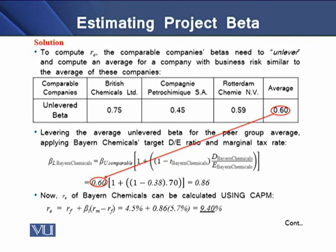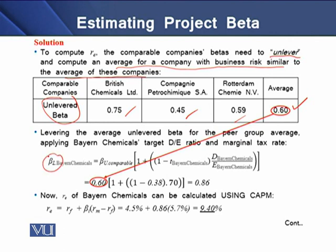To compute the return on equity, we unlever the comparable company betas and then compute an average for a company with business risk similar to these three companies. When we have unlevered the individual betas, the average unlevered beta comes to 0.60. In the next step, we relever this average unlevered beta using Barren Chemicals' target debt-to-equity ratio and marginal tax rate. Using the levered beta equity model, the equity beta comes to 0.86, which is Barren Chemicals' beta.